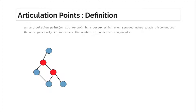Bridges have the same definition — when you remove a bridge the graph gets disconnected or the number of connected components increases. The same is true for an articulation point. When you remove a vertex from a graph you also remove all of the incident edges. So when you remove a vertex and the graph gets disconnected or the number of connected components increases, then that vertex is known as a cut vertex or articulation point.